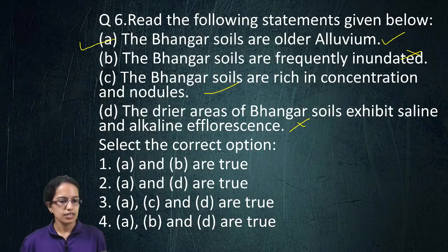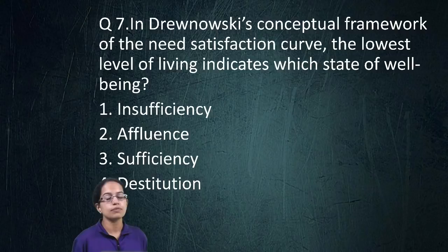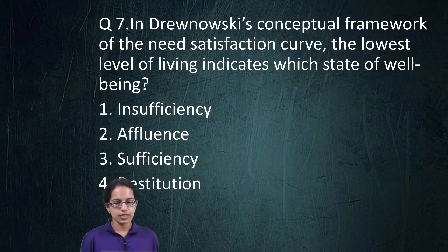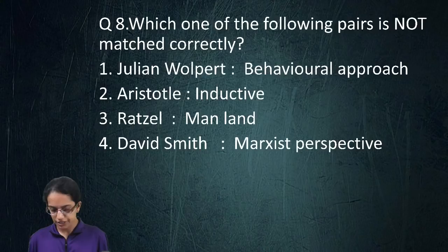The next question is about the concept of the need satisfaction curve. This curve moves from destitution to affluence — the lowest being destitution and the highest being affluence. So that option is the right answer here.